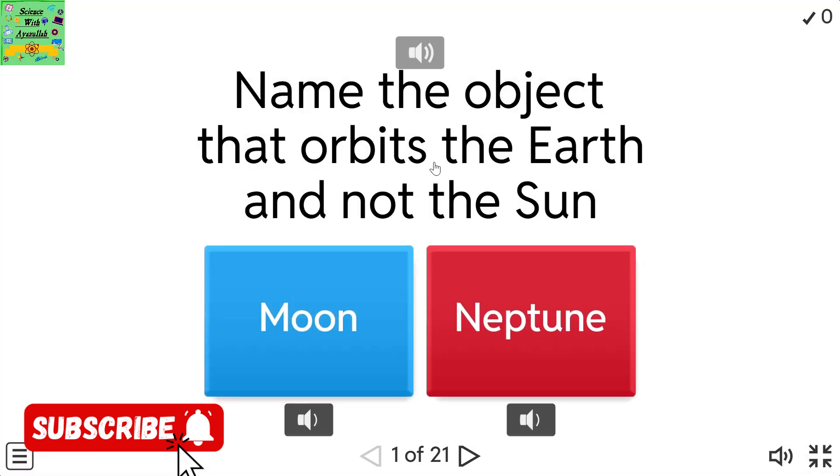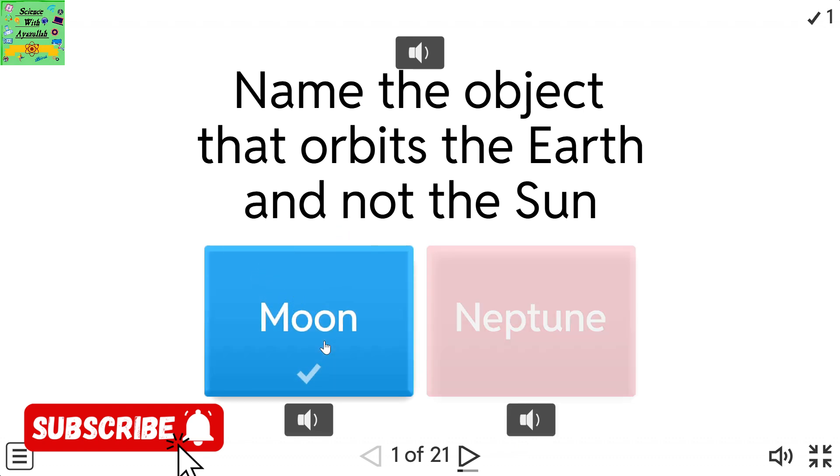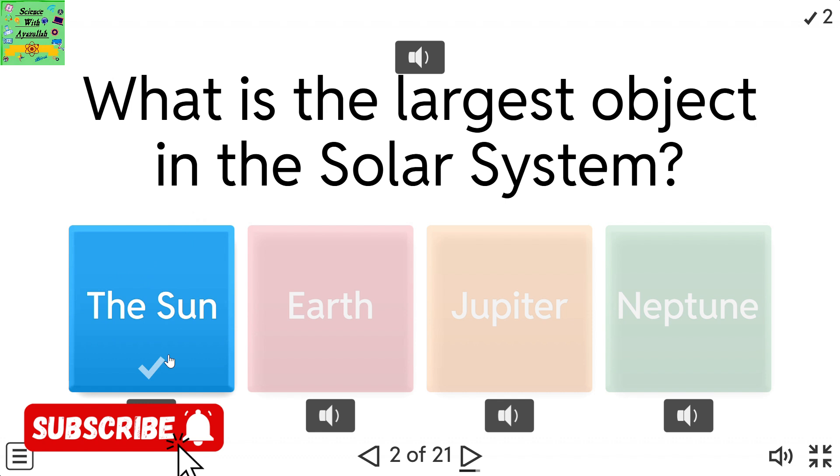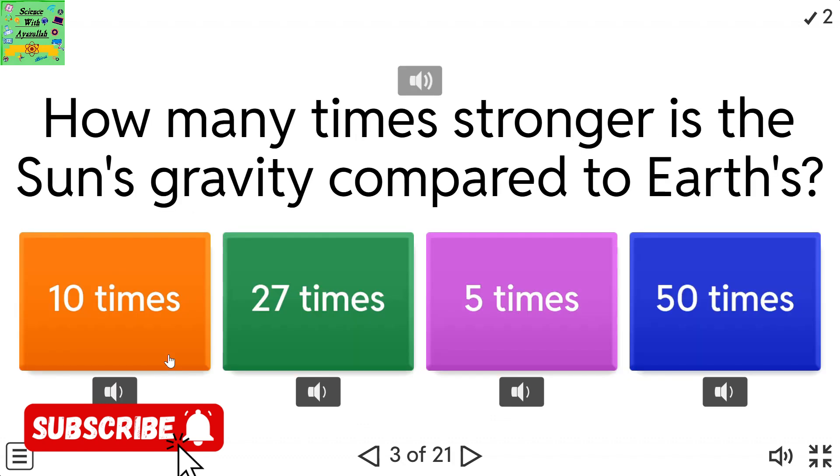Name the object that orbits the Earth and not the Sun. What is the largest object in the solar system? The Sun, Earth, Jupiter, Neptune. How many times stronger is the Sun's gravity compared to Earth's? 10 times, 27 times, 5 times, 50 times.